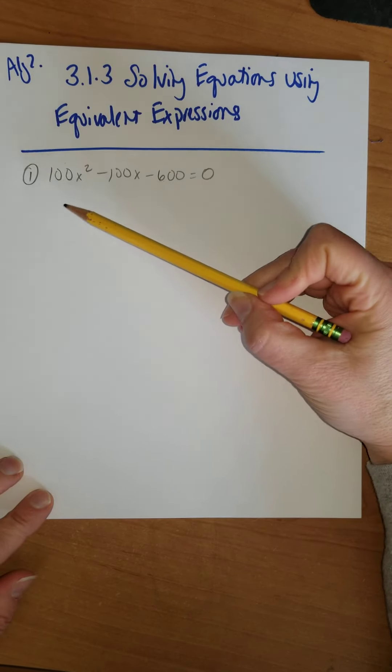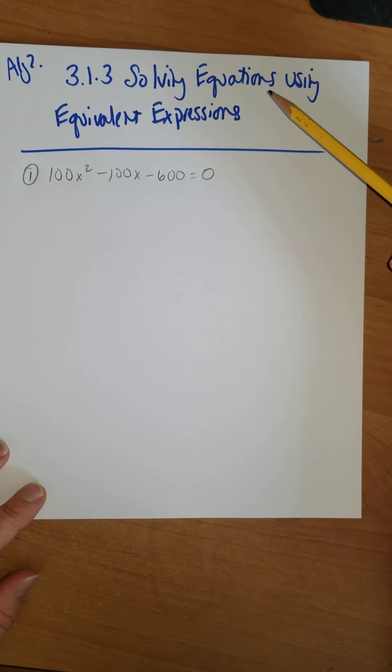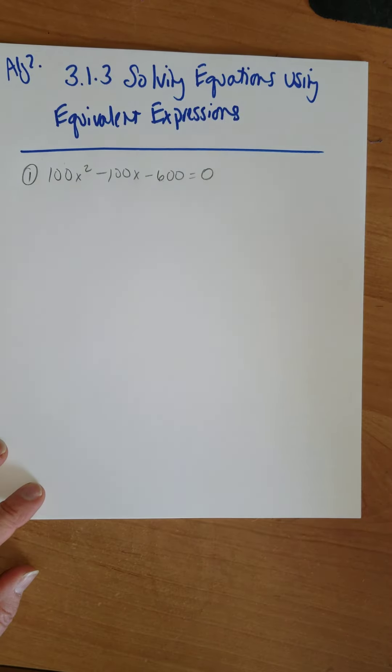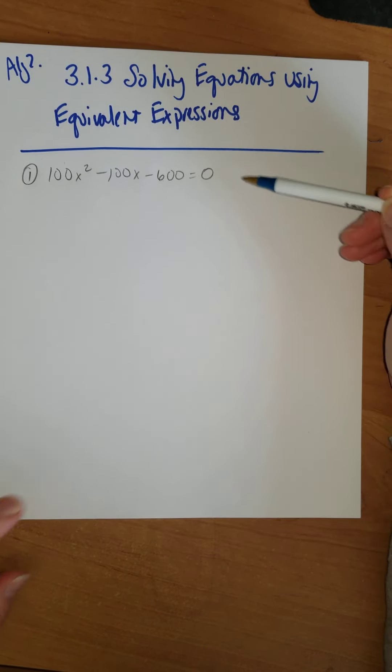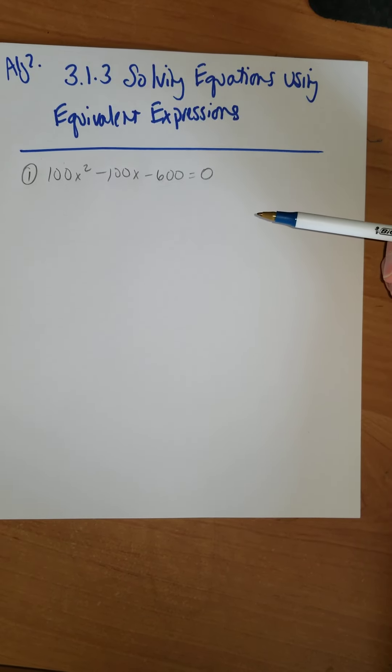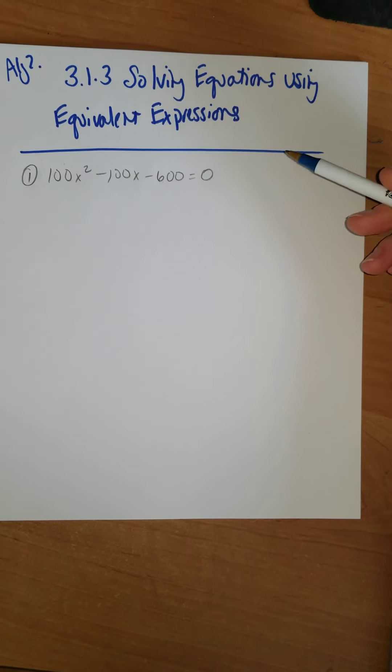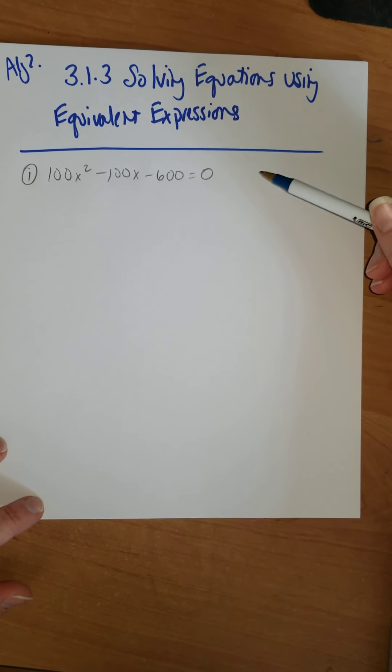So if I have something like 100x² - 100x - 600 = 0, what could I do to make this simpler? Just like when we were doing systems of equations, we should be able to make this simpler by multiplying or dividing everything by a number so that it becomes simpler.